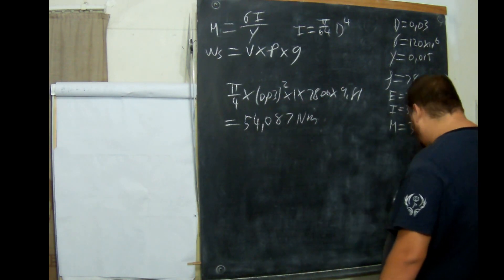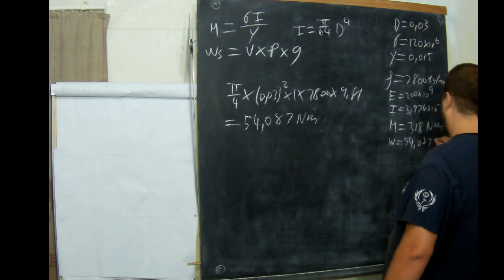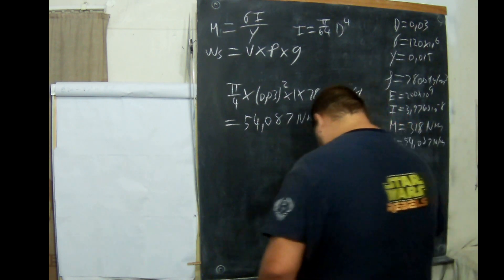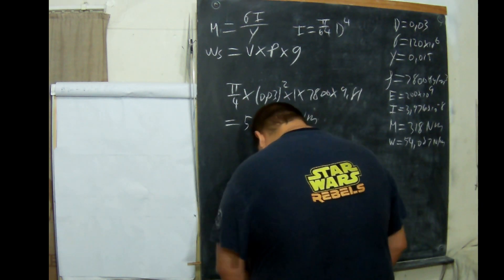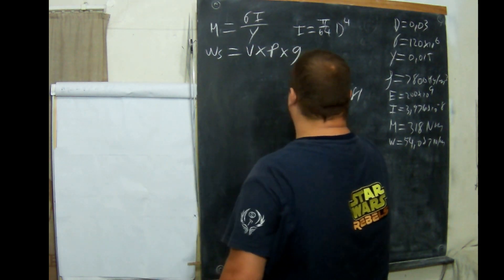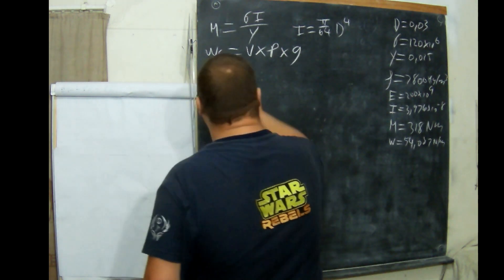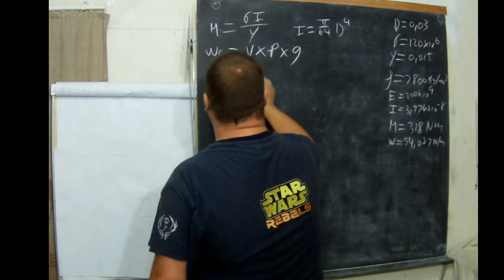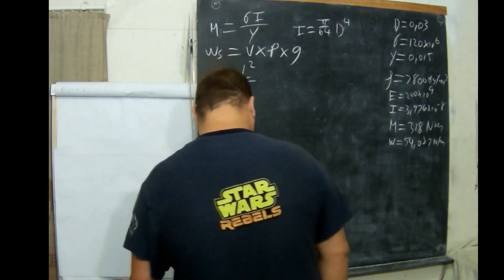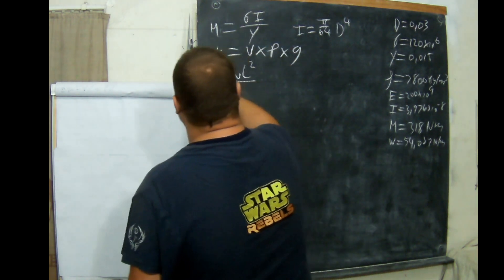That's the weight of the shaft. Now we will need the weight again later. Now what we will do is our next formula that we will use is weight times L squared over 8 equals M.